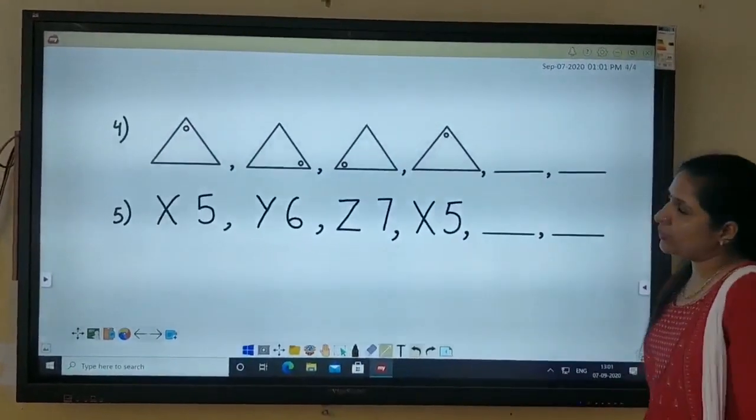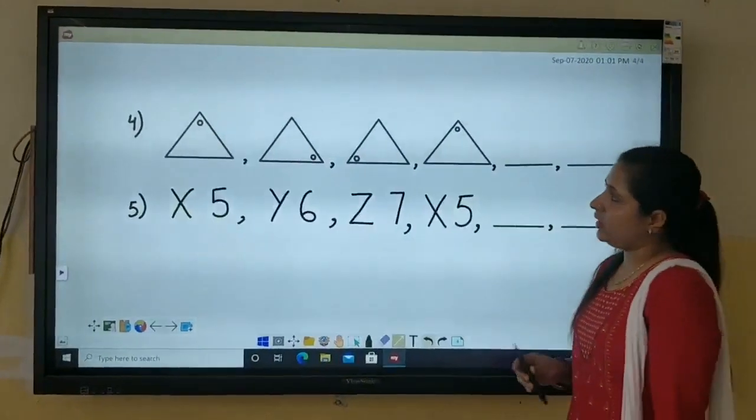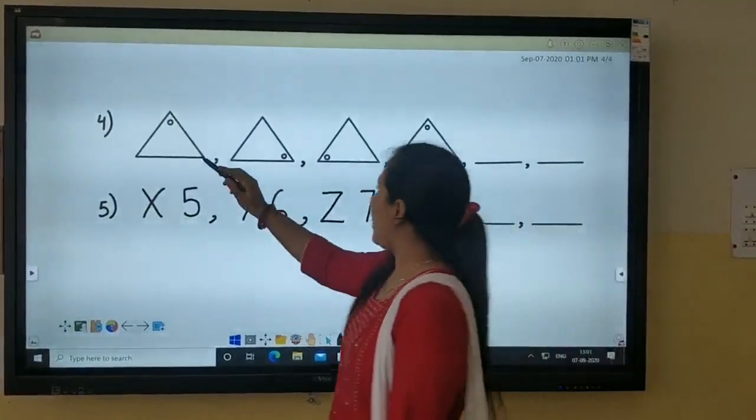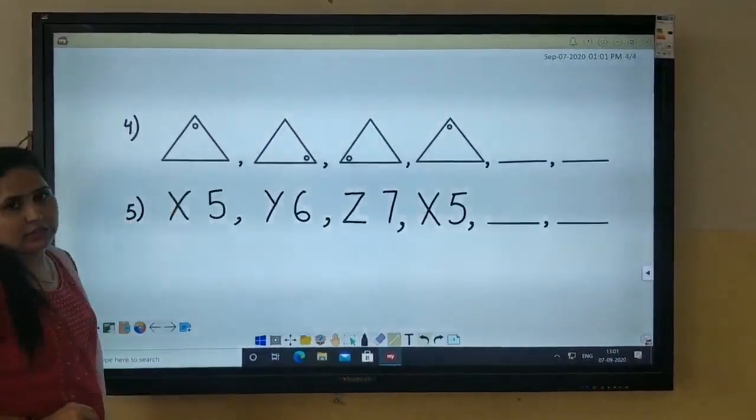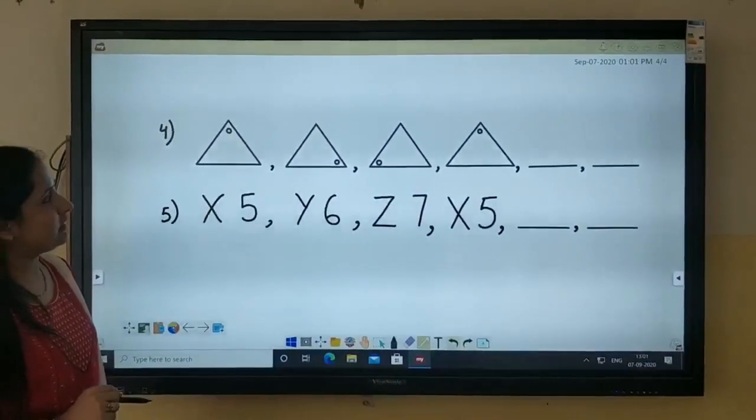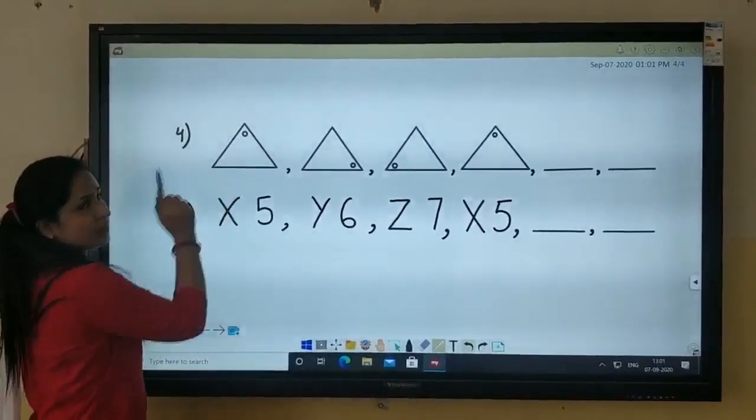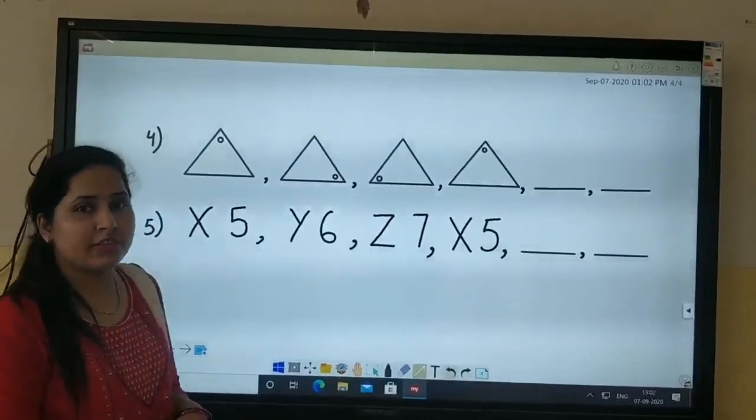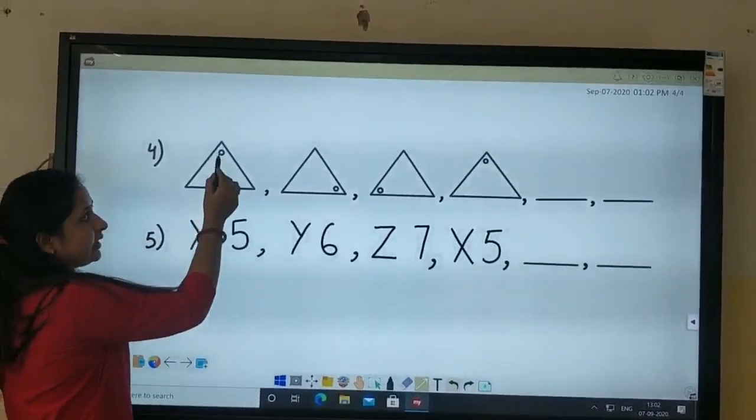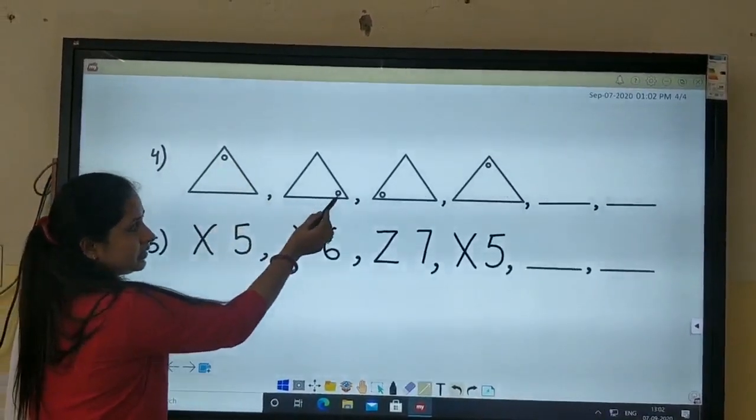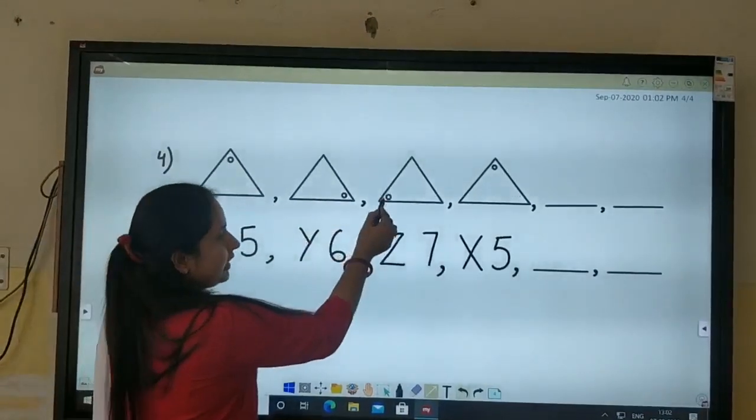Let us continue. Continue the fourth pattern. Here you can see there are a few triangles drawn for you. Four triangles are there. And you can see in the triangle there is a small circle. Here the position of this dot. Here it is drawn in this corner. Then it is moving to the next corner. And then here.